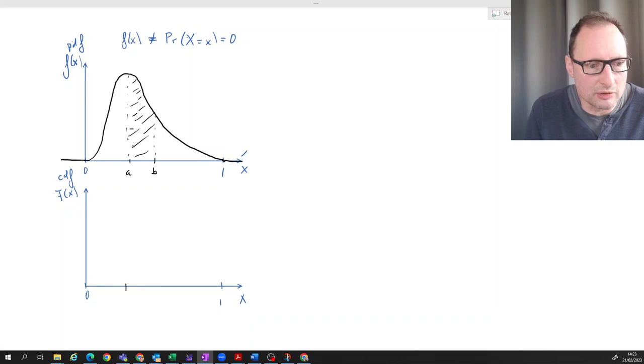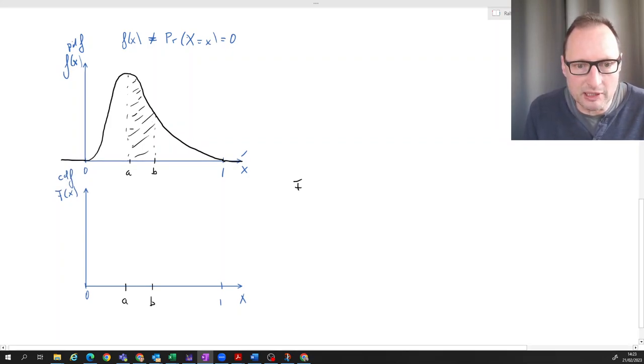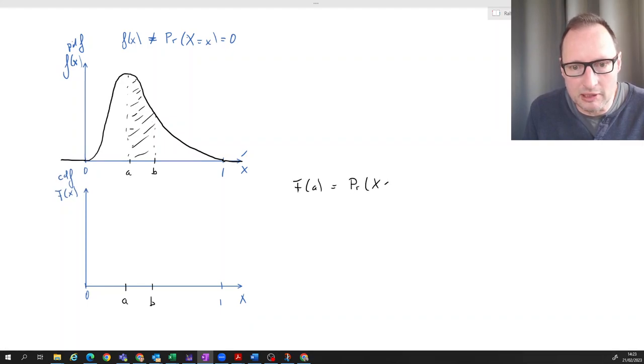So let's for reference, let's use these points A and B as well. So what does the CDF give us? Well, the CDF gives us actually a probability. So for instance, F at A gives us the probability that the random variable takes a value smaller or equal to A.